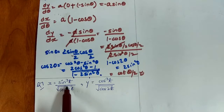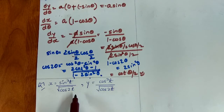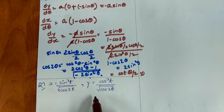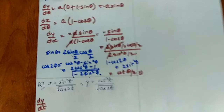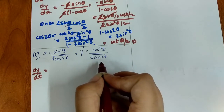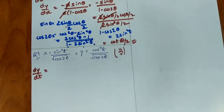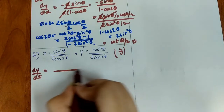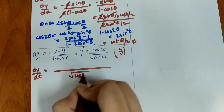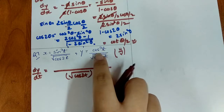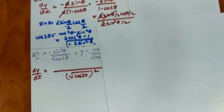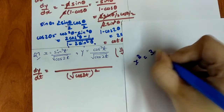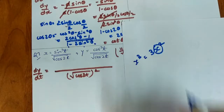Question 7: x = sin³t / √(cos 2t), y = cos³t / √(cos 2t), find dy/dx. The mutual parameter is t. We use the quotient rule since both are in the form u/v. First find dy/dt using the quotient rule: denominator squared is cos 2t. In the numerator, derivative of cos³t is 3cos²t × (−sin t).